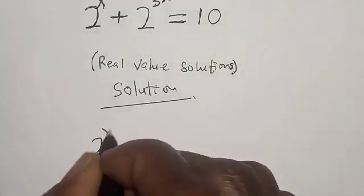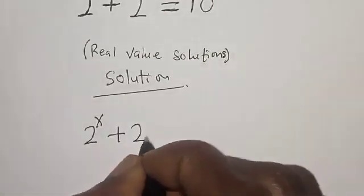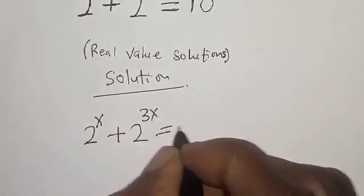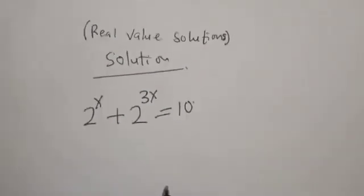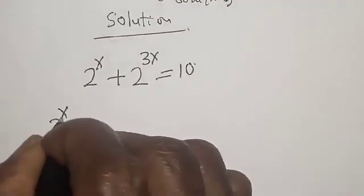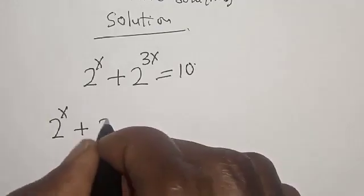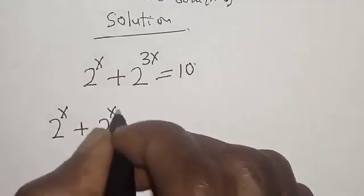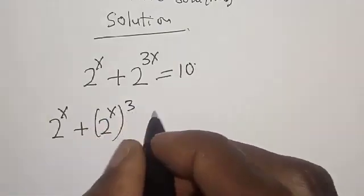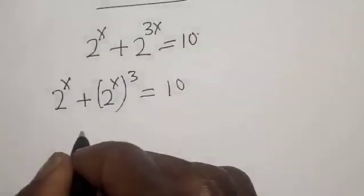Now, 2 raised to power x plus 2 raised to power 3x is equal to 10.